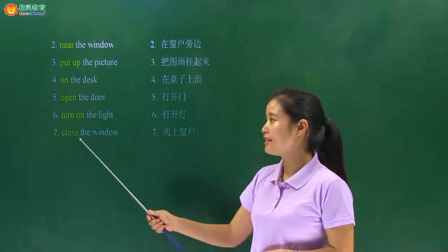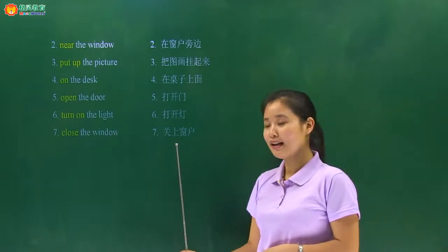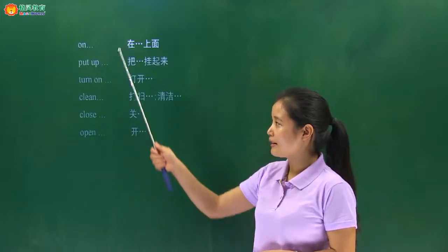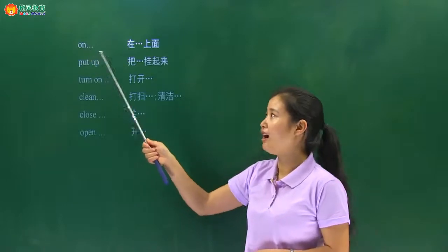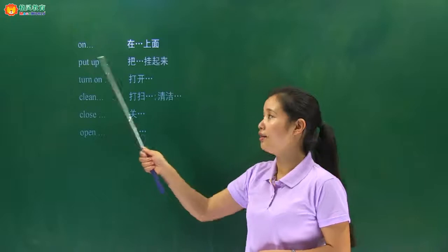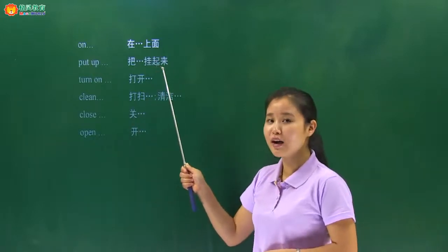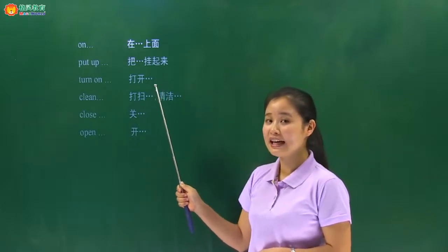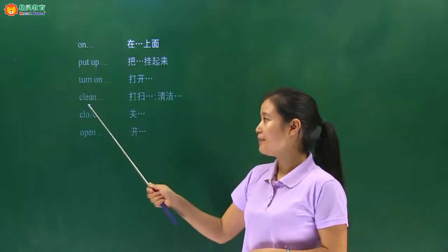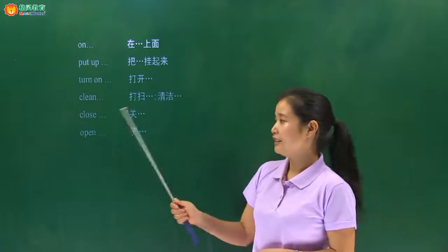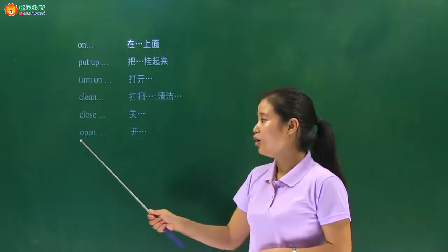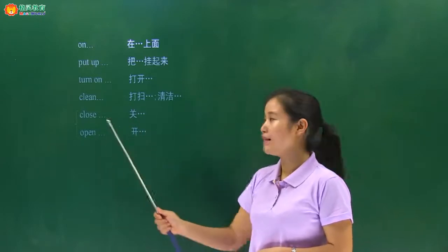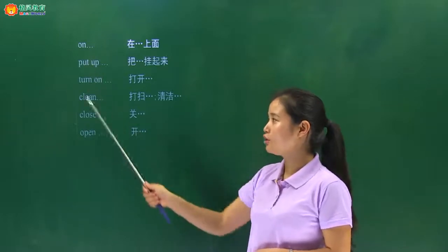最后一个，close the window. Close 跟 open 是一对反义词，close 表示关上，close the window，关上窗户。关上门怎么说呢？Close the door. Open 和 close 这是一对反义词：开门 open the door，关门 close the door.